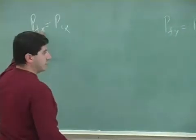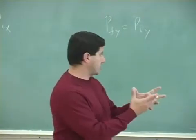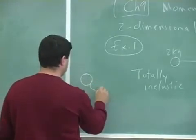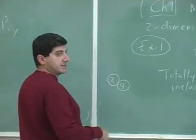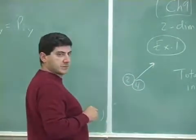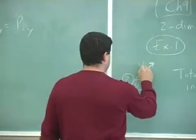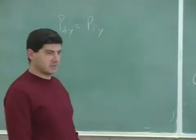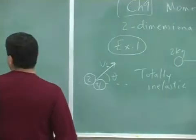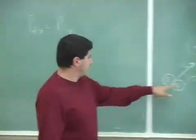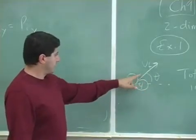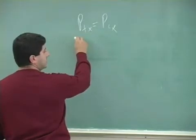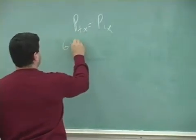After the collision, the two objects are stuck together — 2 kilogram and 5 kilogram — moving in some direction with a final velocity and a final angle theta. The total mass of the system is 6 kilograms. The X component of final momentum is 6 × V_final × cosine(theta), so P_final_X = 6 V_F cos(theta).